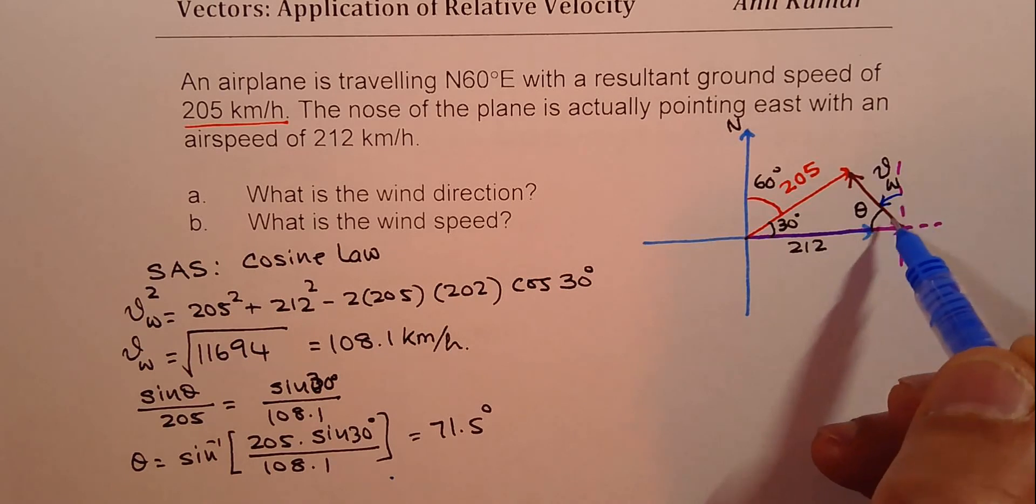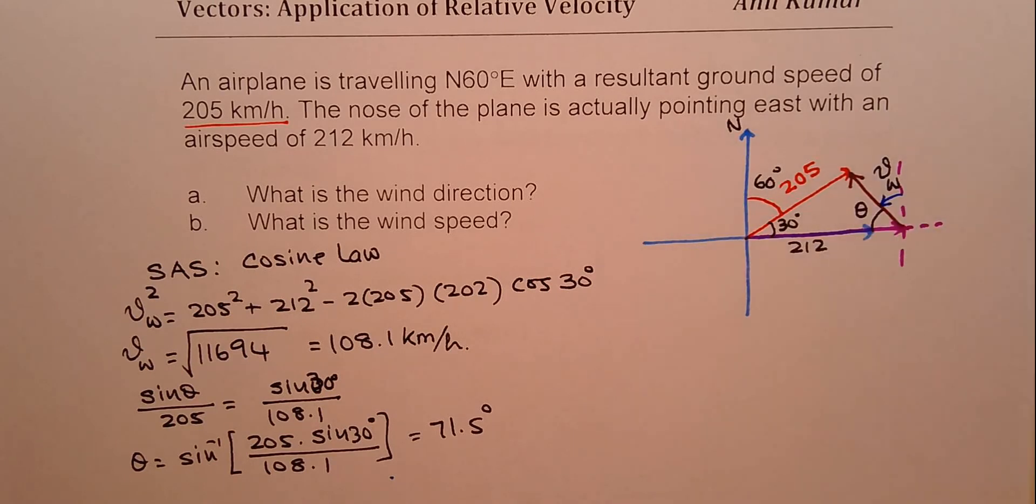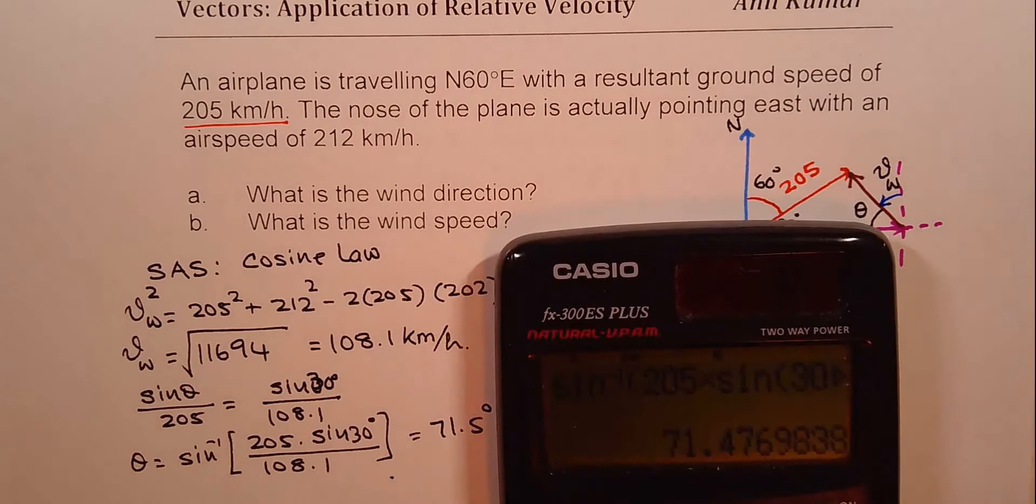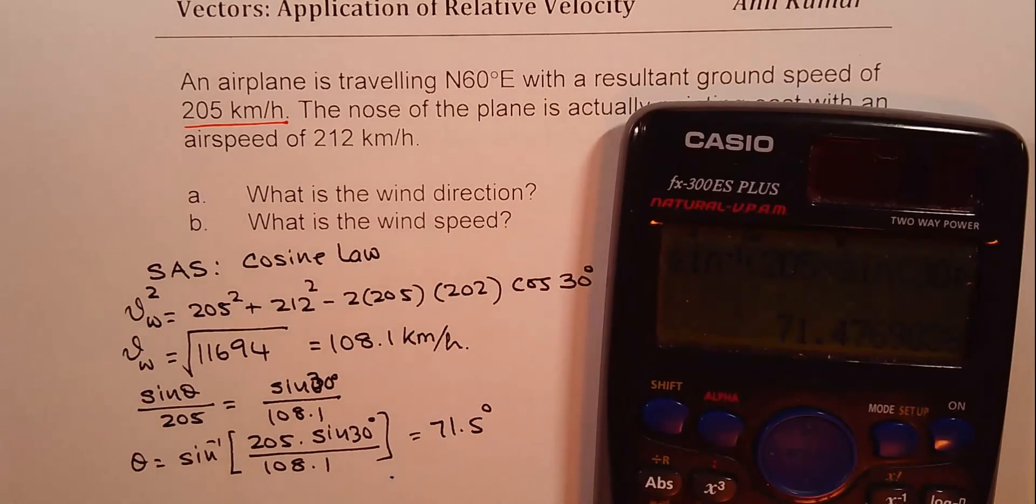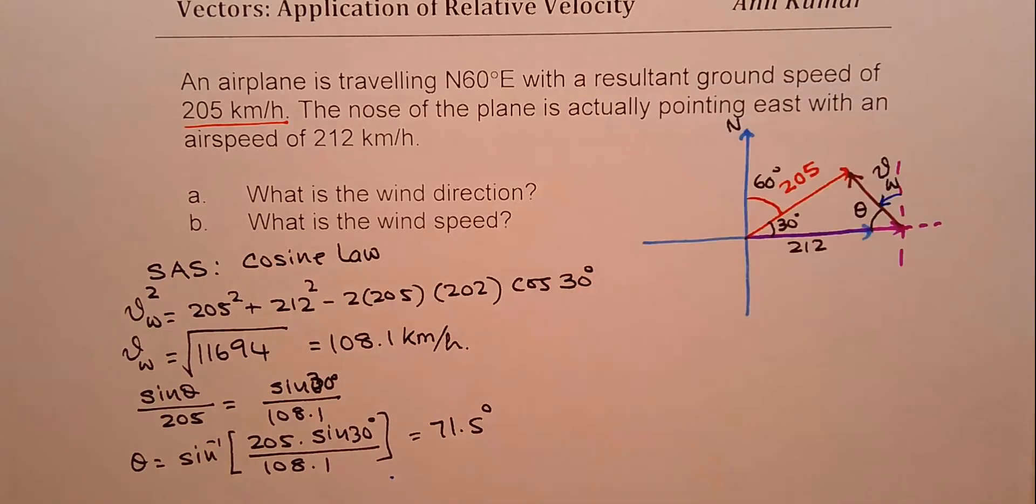So that you could do. So we could say 90 minus 71.5. 90 minus 71.5, which gives you 18.5 degrees.